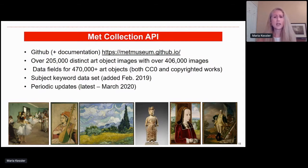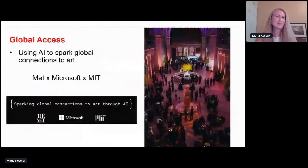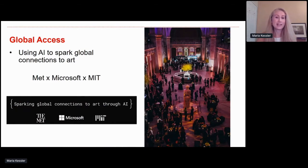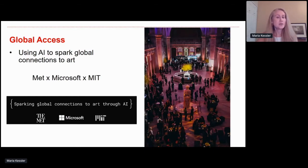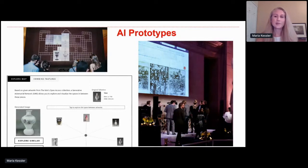Just a few weeks after launch, Microsoft approached us with the opportunity to experiment with artificial intelligence. We thought it was a great idea: let's explore with AI the datasets we already had, put in our subject keyword dataset, and see what would happen. We also invited partners from MIT to join us — because why not add great academic minds to keep us honest. The goal of this collaboration was to use AI, our API, and this new subject keyword dataset to make new connections for global audiences, connecting them to art.